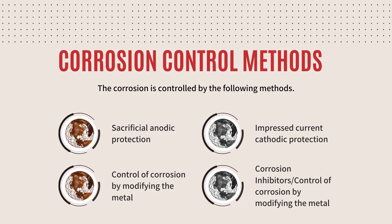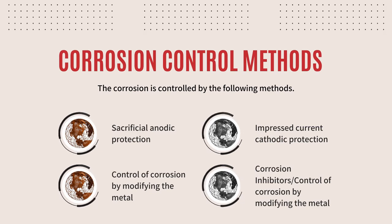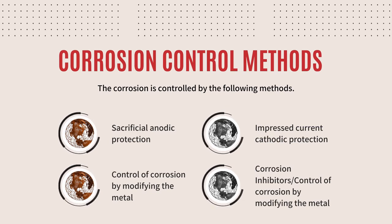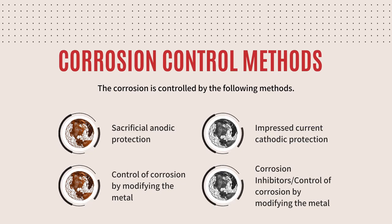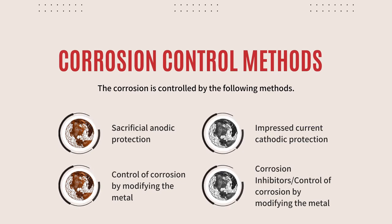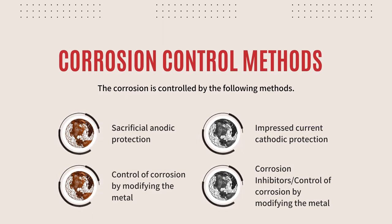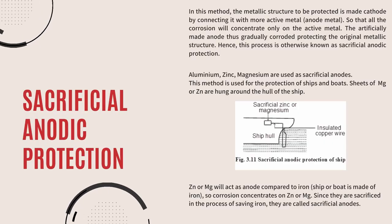The four corrosion control methods are: first, sacrificial anodic protection; second, impressed current cathodic protection; third, control of corrosion by modifying the metal; and fourth, using corrosion inhibitors. Among these, sacrificial anodic protection and impressed current cathodic protection are the most important ones we need to discuss today.